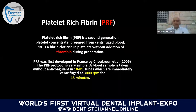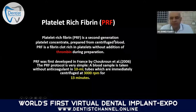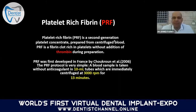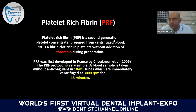The protocol for PRF is simple: a blood sample is taken without anticoagulant in a 10 ml tube, which must be immediately centrifuged. The word 'immediately' is critical because the tube contains no anticoagulant and no thrombin. When you take the blood sample from the patient, you must immediately insert it into the centrifuge machine at a speed of 3000 RPM for 13 minutes.